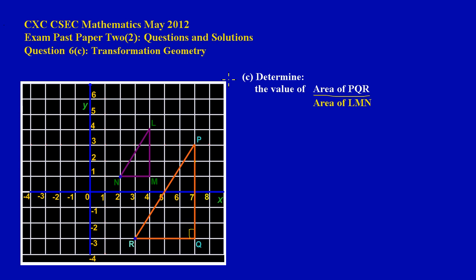Welcome back. In this video we're looking at the solution to question 6c on the May 2012 CSEC math exam past paper — a typical transformation geometry question. They're asking us in part C to determine the value of the area of triangle PQR over the area of triangle LMN.